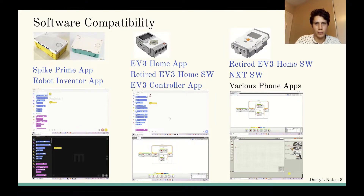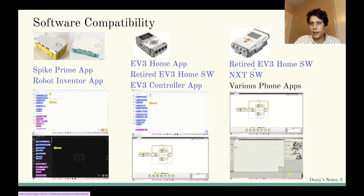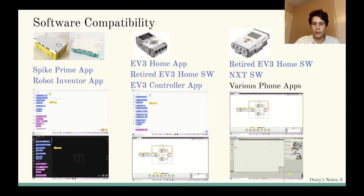For the EV3, there are multiple softwares you can use, and I'll show you where they are on the website because it's kind of hard to find. There's the Scratch-like interface software, which is the home app, and then there's the EV3 retired home software which has more pictures on it — this is better for students who can't read. You can also use that same retired software on the NXT. So if you want software that works on both EV3 and NXT, get the retired EV3 home software. If you have only an NXT and want to use the original NXT software, that's also available. There are also a couple of phone apps you can use to remote control your NXT.